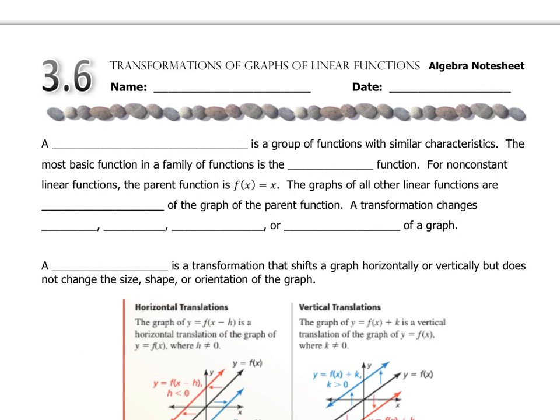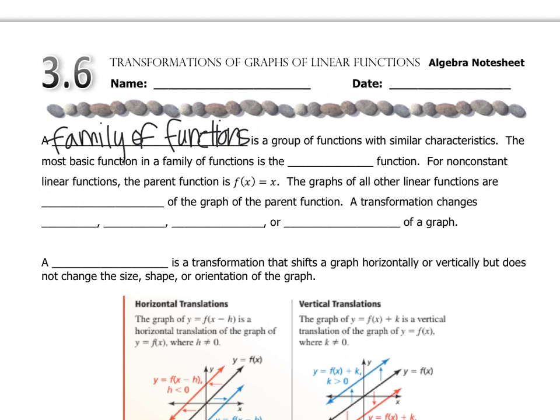What it's about is a family of functions, and just like a family of people, they have something in common. The most basic function in a family is called the parent function, and for non-constant linear functions it's f of x equals x, which we also know as y equals x. That would be a line with a slope of 1 going through the origin. Every other line is a transformation of that parent function.